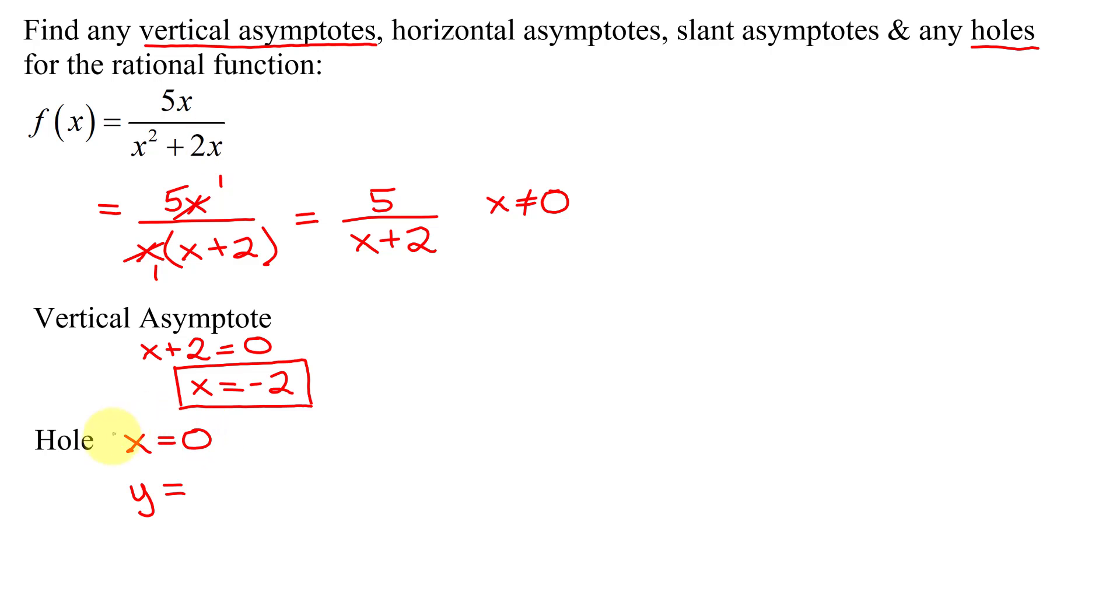You always plug this value into the simplified version of the function. So I get y = 5 divided by (0 + 2), so y = 5/2. So the coordinates of the hole are x = 0, y = 5/2, or the point (0, 5/2).